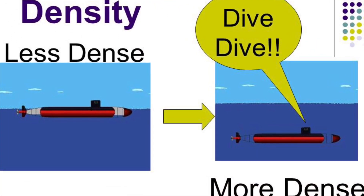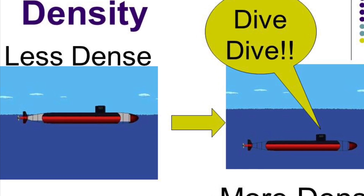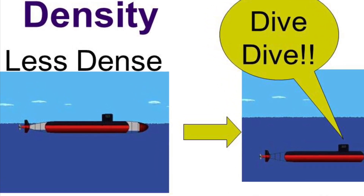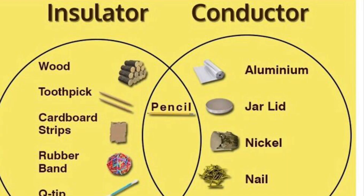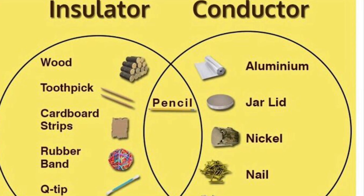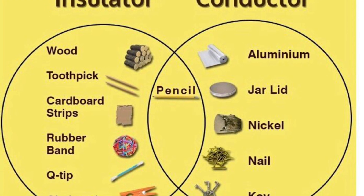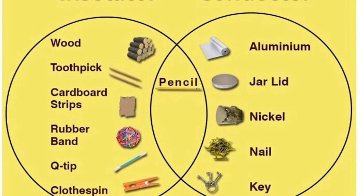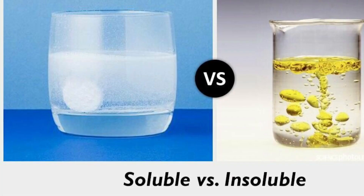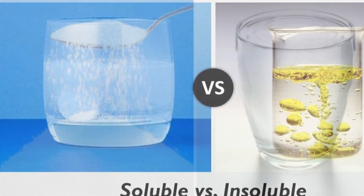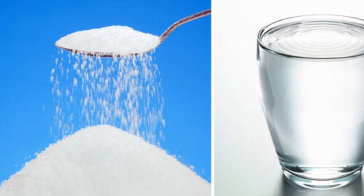Objects that are denser than another will sink, while an object that is less dense will tend to float. Water is a reference point. Materials that help energy pass are called conductors, while insulators are materials that slow or stop energy. Solubility is the ability of a solute to dissolve in a liquid — like sugar in water, you just made a solution.